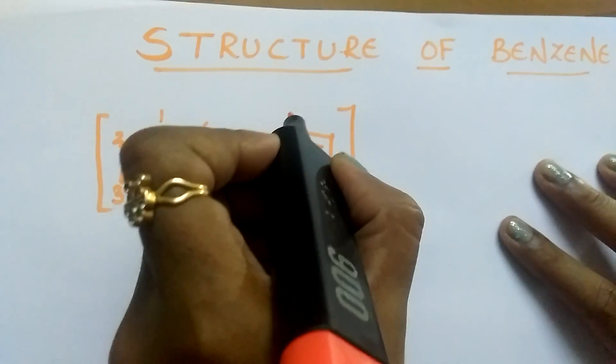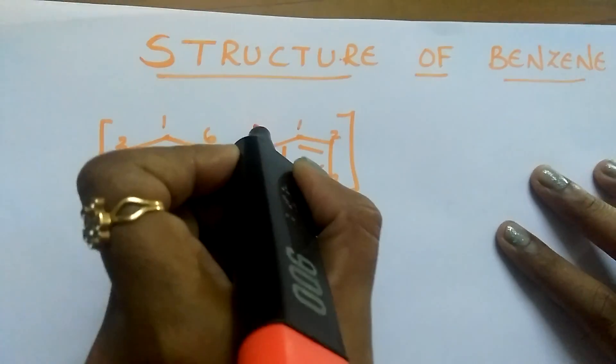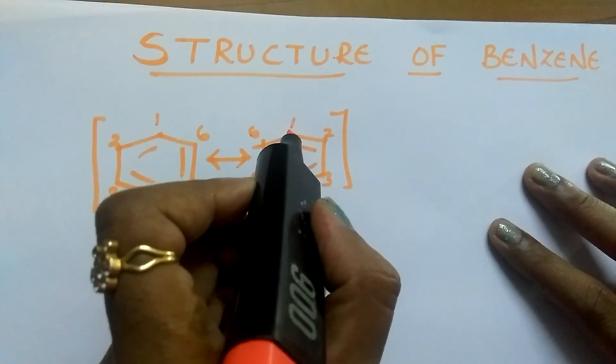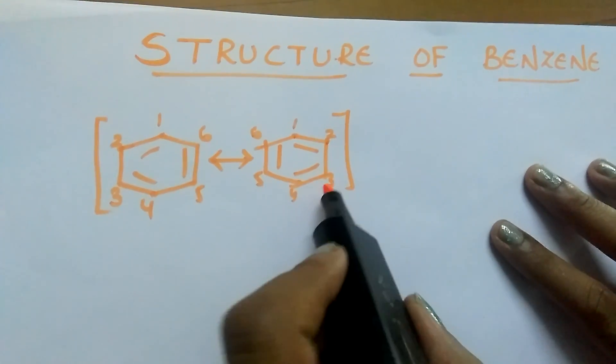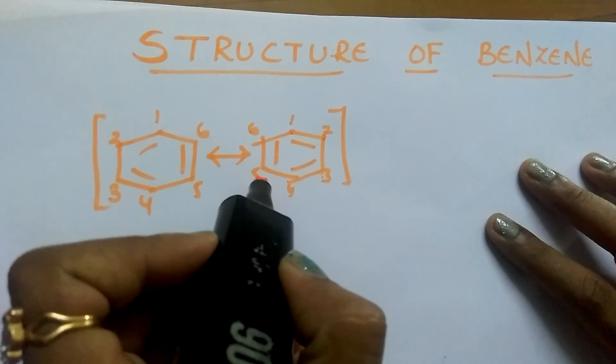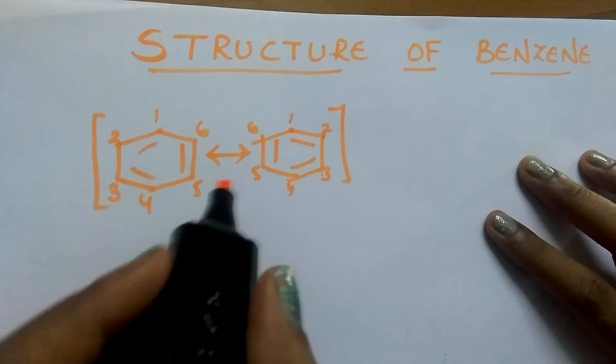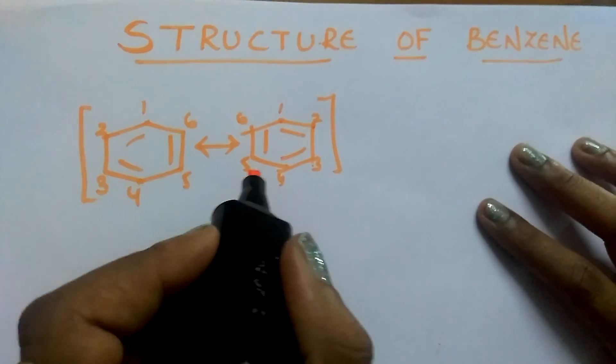But in another structure, the pi bond is present between first carbon and second carbon, third, fourth carbon and fifth and sixth carbon. These two structures were given by Kekule.